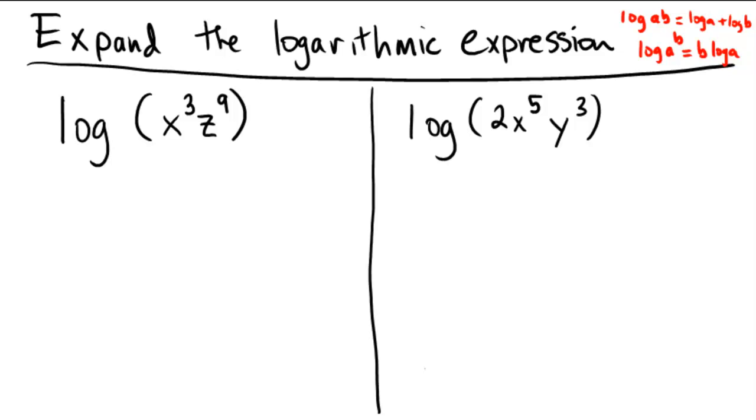So first problem is logarithm x cubed z to the ninth. I see a product here, and therefore I'm going to be doing two logarithms, one of which is a log of x, one of which is a log of z. Now according to the power rule, since the x is being cubed, that exponent on the x is now going to become a coefficient. It's now going to become 3 log x. And similarly, the z to the 9, the 9 is going to become a coefficient on that piece.